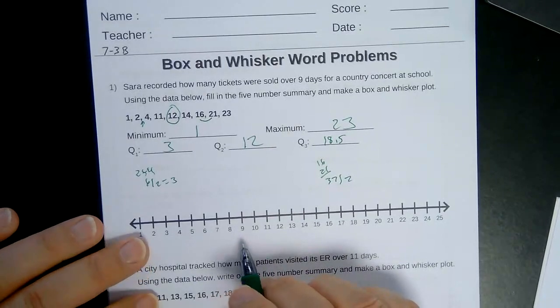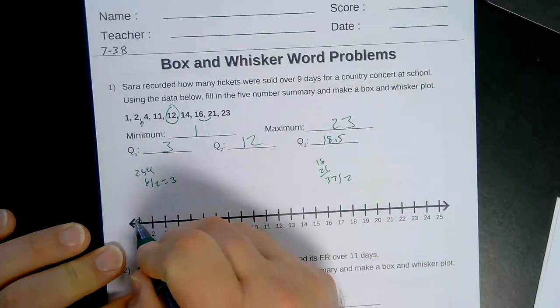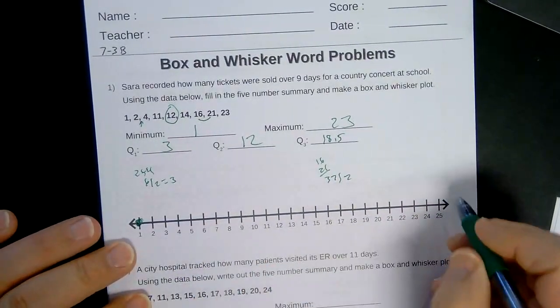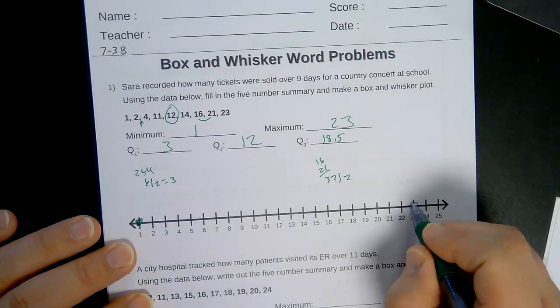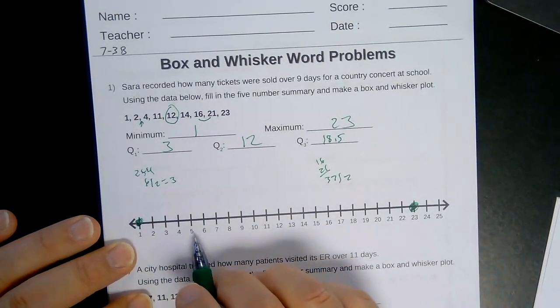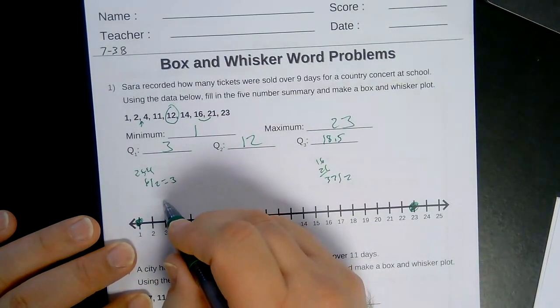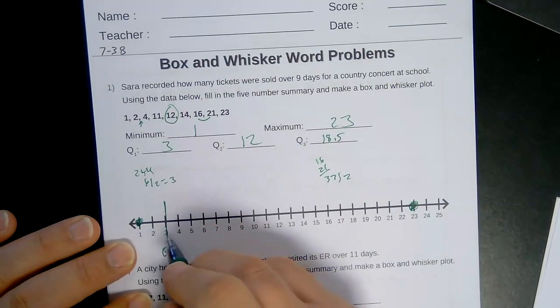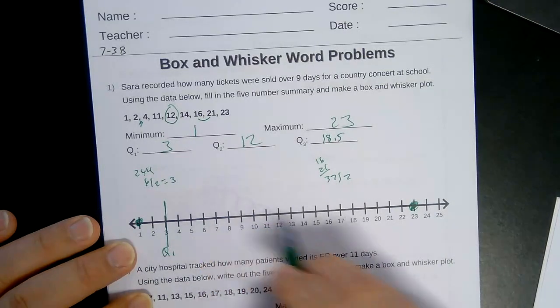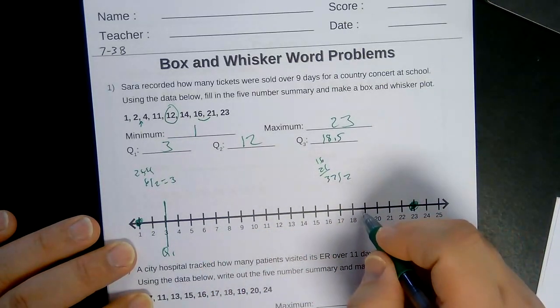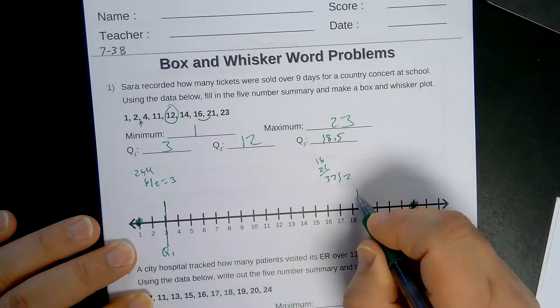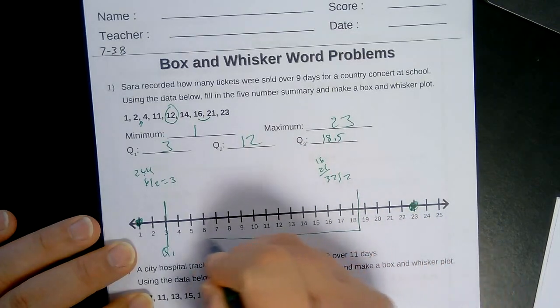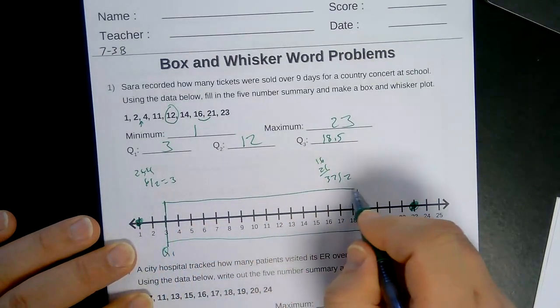Okay, and then we just have to plot them now. The minimum is 1. Let's see, maximum is 23. And quartile 3, this time I'm just going to draw my line here. Here's quartile 1 at the number 3. Quartile 3 is at 18.5, so right about here. Draw my box all the way through.